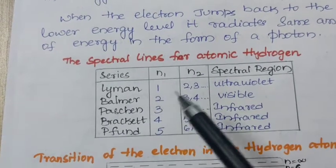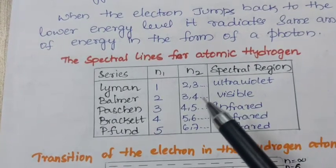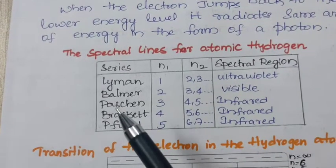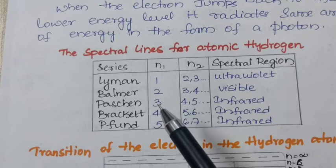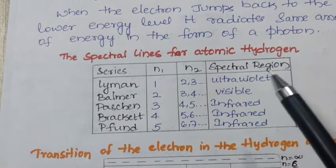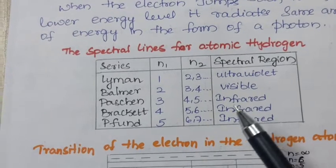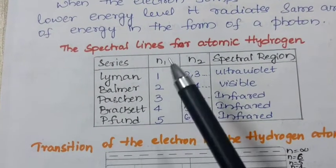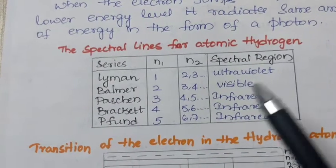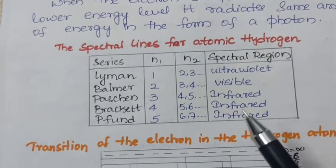Balmer series when N1 is equal to 2 and N2 is 3, 4 and it appears in the visible spectral region. Next is Paschen series, N1 is equal to 3 and N2 is 4, 5 and spectral region is infrared. Next is Bracket series, when N1 is equal to 4, N2 is equal to 5, 6 and spectral region is infrared.